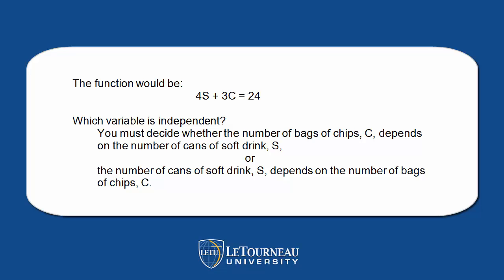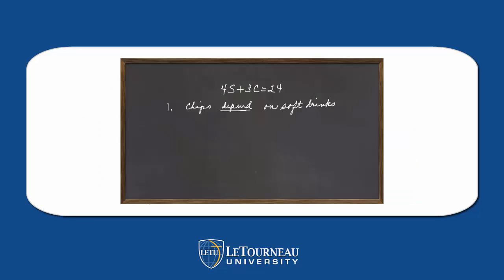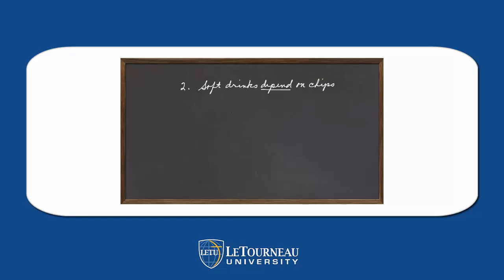Which variable is independent? Stop the video at this point and think about it. Now let's look. Let's suppose that chips are going to depend on soft drinks, so we're going to solve for c. c is going to equal 8 minus 4 thirds s.